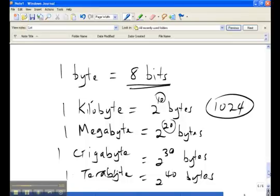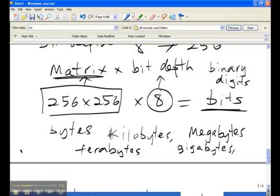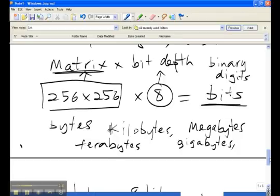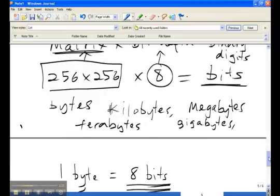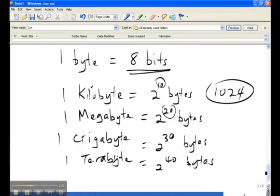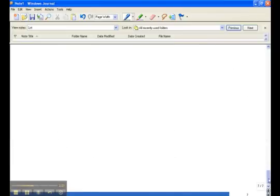I'm going to try and make the math as simple as possible. Let's go back to our first example. Let me start a new page. Let's say we had one image which was 256 by 256 as our matrix and our bit depth of 8.